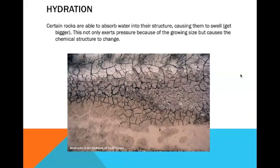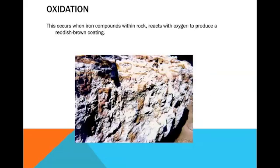Then we've got hydration. This is when certain rocks are able to absorb water into their structure, causing them to swell — get bigger. This not only exerts pressure because of the growing size, but causes the chemical structure to change. Lastly, we've got oxidation. This occurs when iron compounds within the rock react with oxygen to produce a reddish-brown coating, also known as rust. It's called oxidation because it reacts with the oxygen.